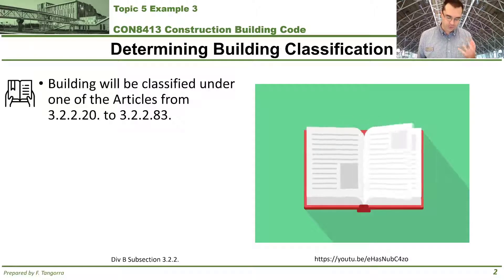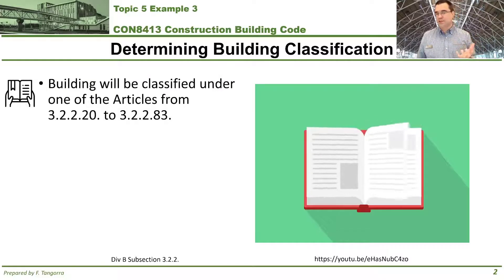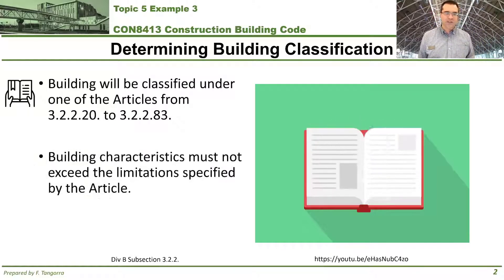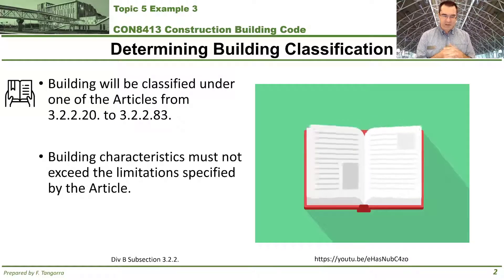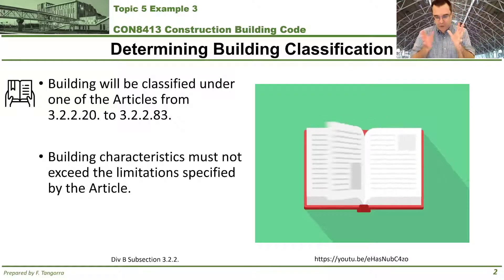So what are we doing in general terms, just as a reminder? We're looking to find out how to use this series of 63 articles from Volume 1, Division B, Part 3. They go from Articles 3.2.220 to 3.2.283. What these articles contain are a set of safety requirements for protecting structure against fire. This is done by identifying five building characteristics and how they allow you to zoom into one of these 63 articles.